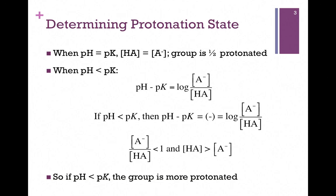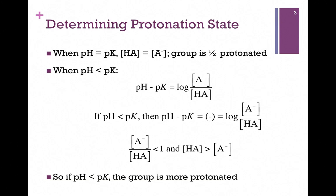Let's rearrange the Henderson-Hasselbalch equation and put the pKa value on the left. So now our expression is: pH minus pKa equals the log of the ratio of the conjugate base to the acid. If pH is less than pKa, the value on the left becomes negative. To take the log of a number and get a negative value, that number must be less than 1. This tells us the ratio of conjugate base to acid is less than 1, and therefore the concentration of the acid is greater than that of the base — in other words, the group has more protons. It's more protonated.